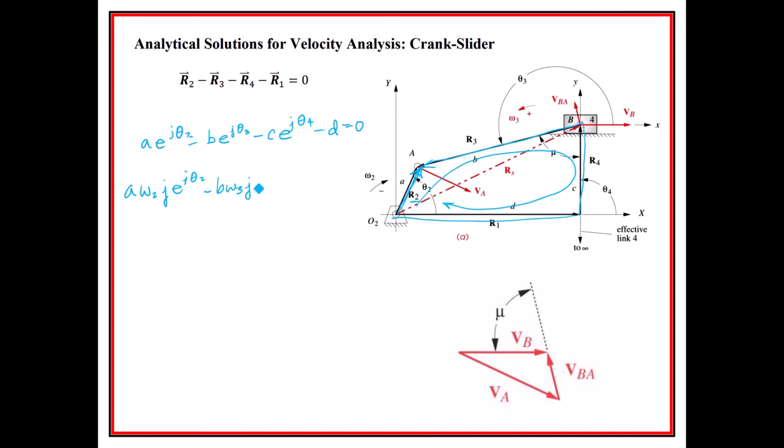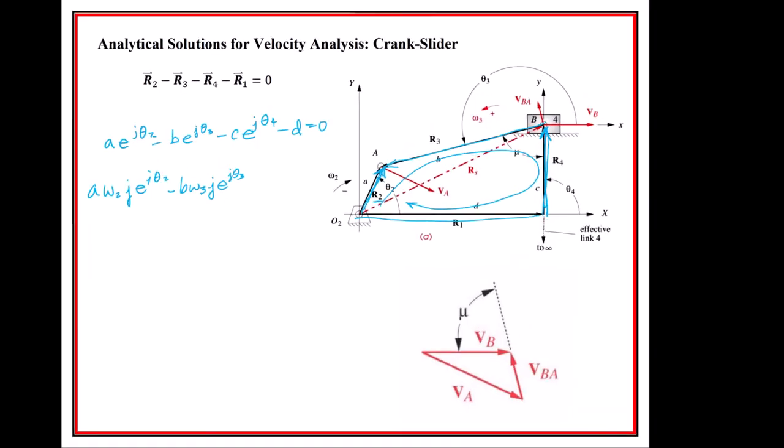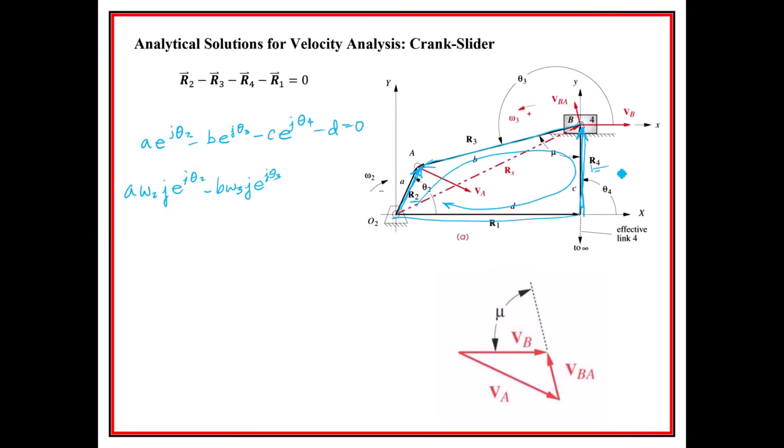Minus c*omega4... but wait, forget about that. Look, this vector right here never changes in length and never changes in theta. Therefore, the time derivative of it is zero.